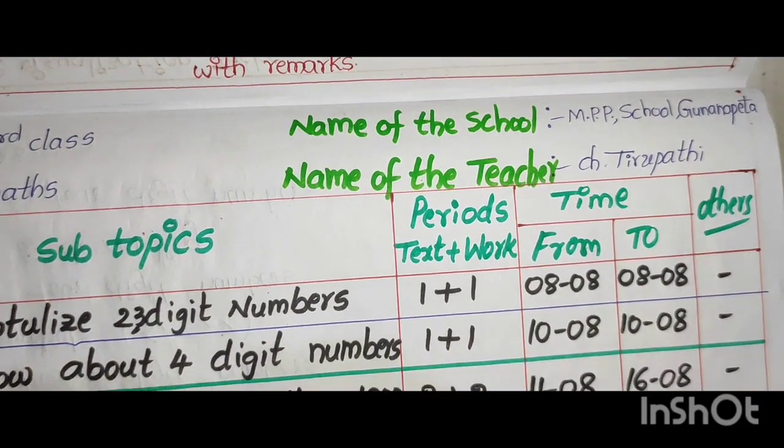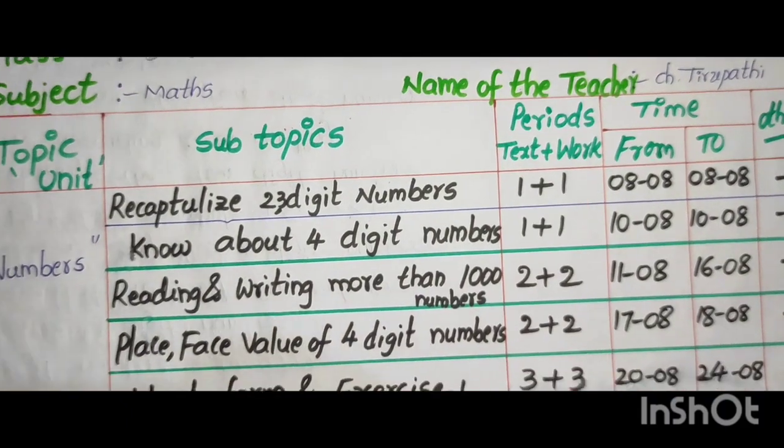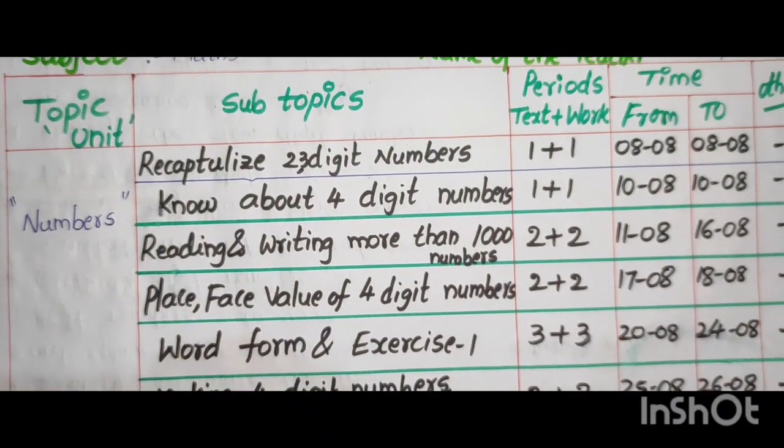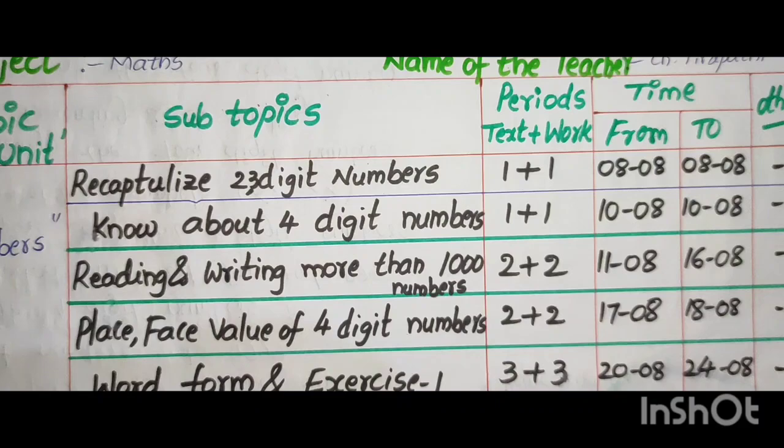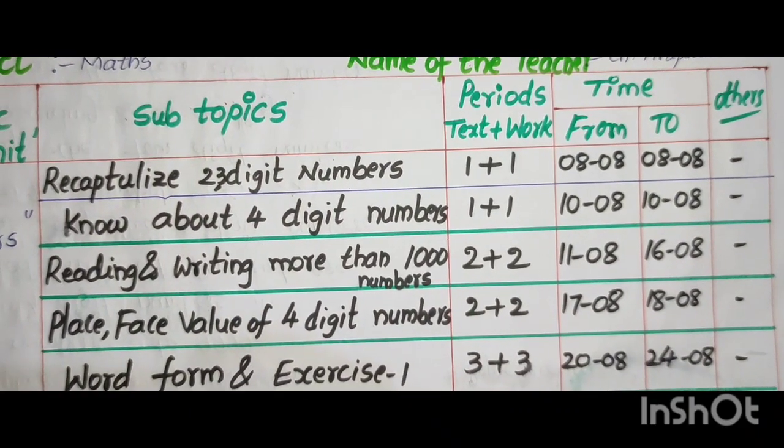Columns: Unit, Subtopics, Periods, Textbook plus Workbooks, Time From, To, and Others. Class Unit: Numbers. 3rd class Numbers. Subtopics.